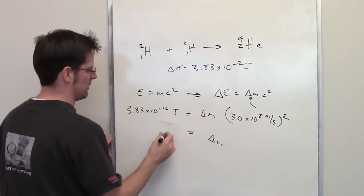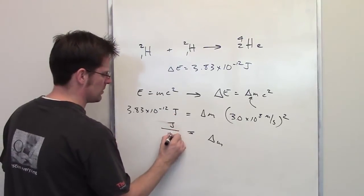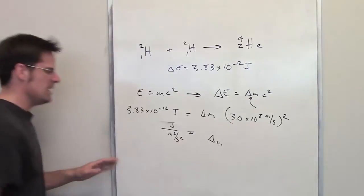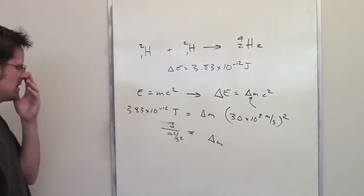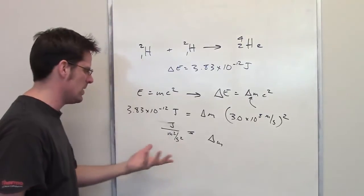The units, however, might be a little bit confusing because the units are going to be joules divided by meters squared per second squared. And as you look at that more closely, you might look at it and say, well, wait a minute. That isn't a mass amount. So what in the world is going on?